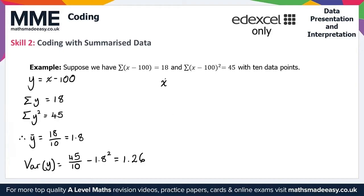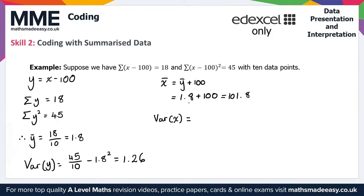To find x-bar, we use x-bar equals y-bar plus 100, which is 1.8 plus 100, giving 101.8. For the variance of x, since we only subtracted 100 from each number (no division), the variance of x equals the variance of y, which is 1.26. That gives us everything for Skill 2 on coding with summarized data.